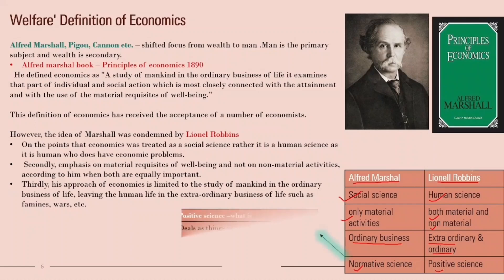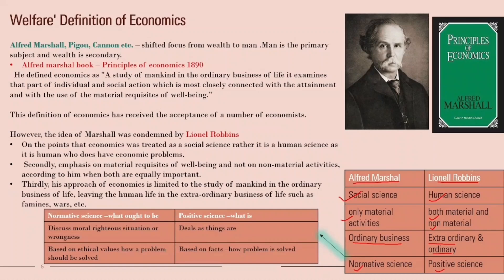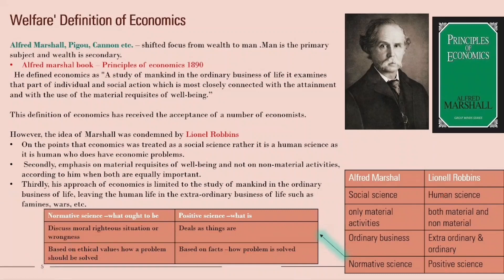What is the difference between normative and positive science? Normative science is about what ought to be — it talks about right and wrong situations based on ethical values. Positive science is about what is — it deals with facts and doesn't judge right or wrong. Normative science tells us how to solve a problem correctly, whereas positive science tells us how the problem is solved in reality.